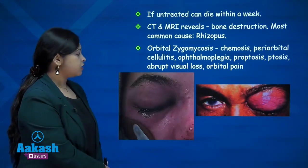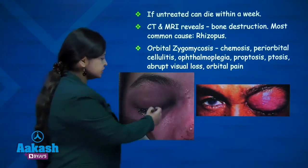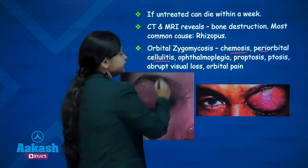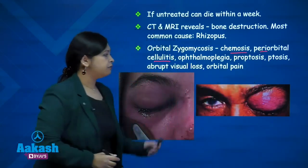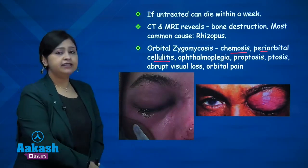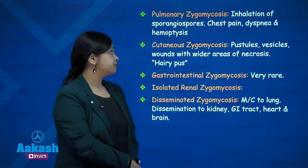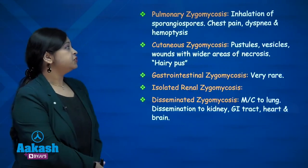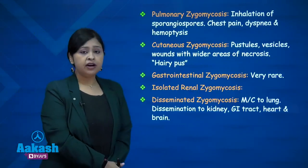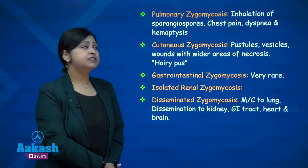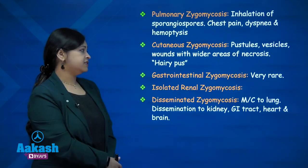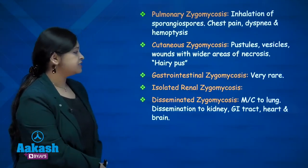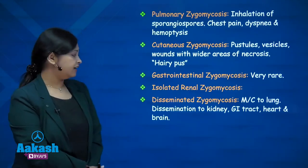Orbital zygomycosis presents with chemosis, periorbital cellulitis, ophthalmoplegia, proptosis, ptosis and abrupt visual loss. Pulmonary zygomycosis occurs due to inhalation of sporangiospores and presents with chest pain, dyspnea and hemoptysis. Cutaneous and gastrointestinal zygomycosis are very rare.